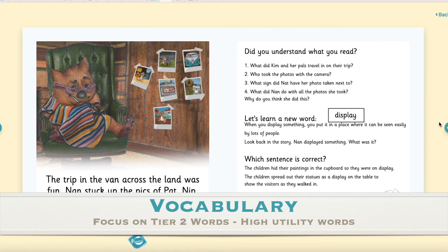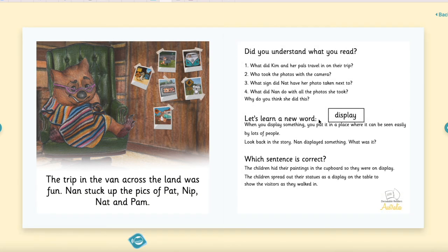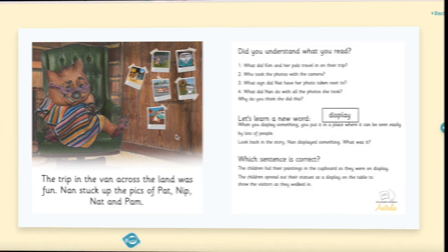The online library also supports the teaching of vocabulary. We've done the hard work for you — as you can see we've got a word chosen for each book in the inside back cover, and we've even given a student-friendly definition that you can read out. Once again if the book is projected up nicely you can use the context of the story and the pictures to assist in teaching vocabulary. For example, this word is 'display' — when you display something, you put it in a place where it can be seen easily by lots of people. And you can show on your smart board how Nan displays the pics from the trip.